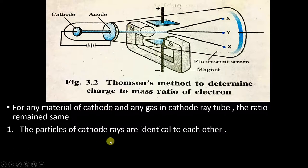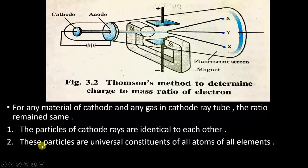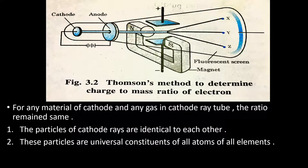The first conclusion was that the particles of cathode rays are identical to each other — since the ratio remained the same regardless of the cathode material, the particles must be the same. The second conclusion was that these particles are universal constituents of all atoms of all elements, meaning these cathode ray particles are present in every atom of every element, no matter which material is used.